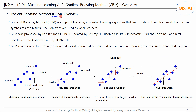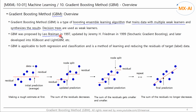Let's take a look at the outline of the GBM. GBM is a boosting-based ensemble learning algorithm that trains multiple weak learners and aggregates their results to make predictions. Decision trees are used as the weak learners. GBM was proposed by Leo Breiman in 1997 and updated by Jeremy Friedman in 1999.